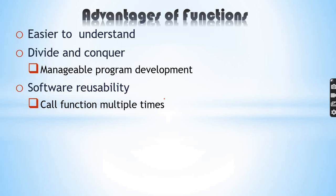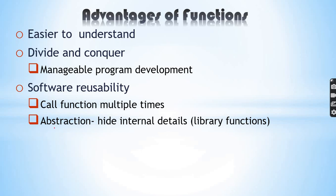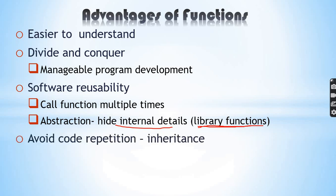What is the function? I will show you in the video. We can achieve abstraction. Data hiding is also a benefit. We can create our own library functions — the library functions are called by the hash include directive. We can also easily avoid code repetition by using the concept of inheritance.